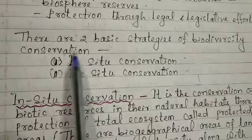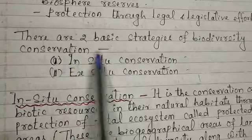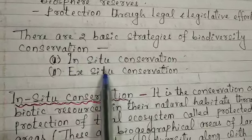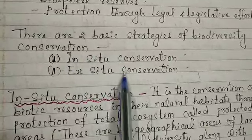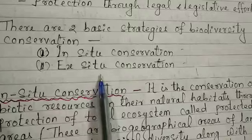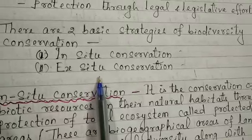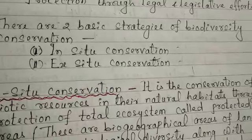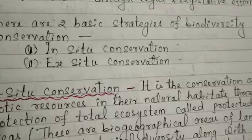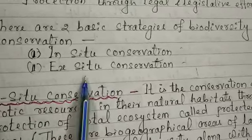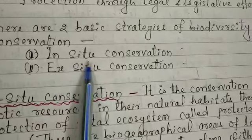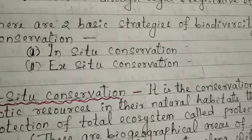The first strategy is to protect wildlife in their own location. The second is to bring them out of their habitat and take care of them under our supervision — that is called ex-situ conservation. The two strategies are in-situ conservation and ex-situ conservation.